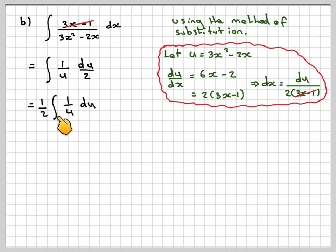So that's 1 half the integral of 1 over u du. Now the integral of 1 over u is ln of u plus c. And then replacing for u, ln of the absolute value of 3x squared minus 2x plus c.